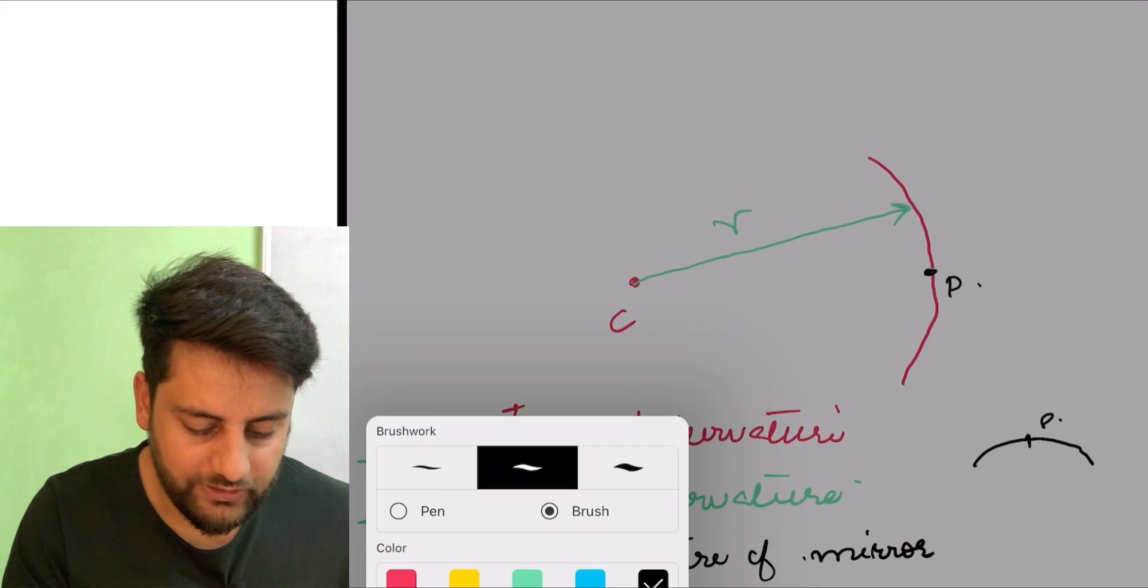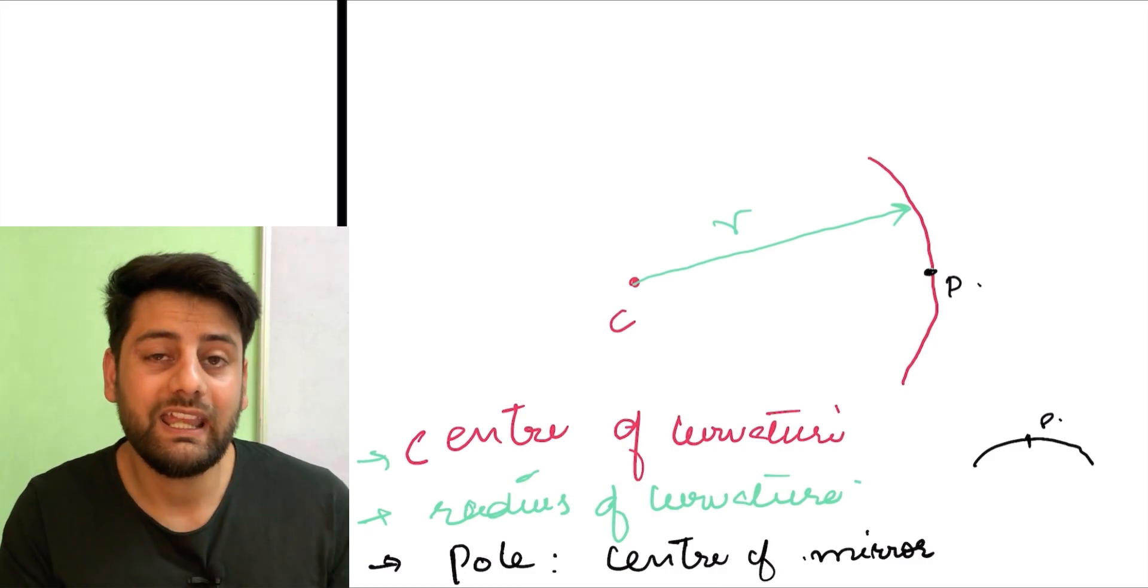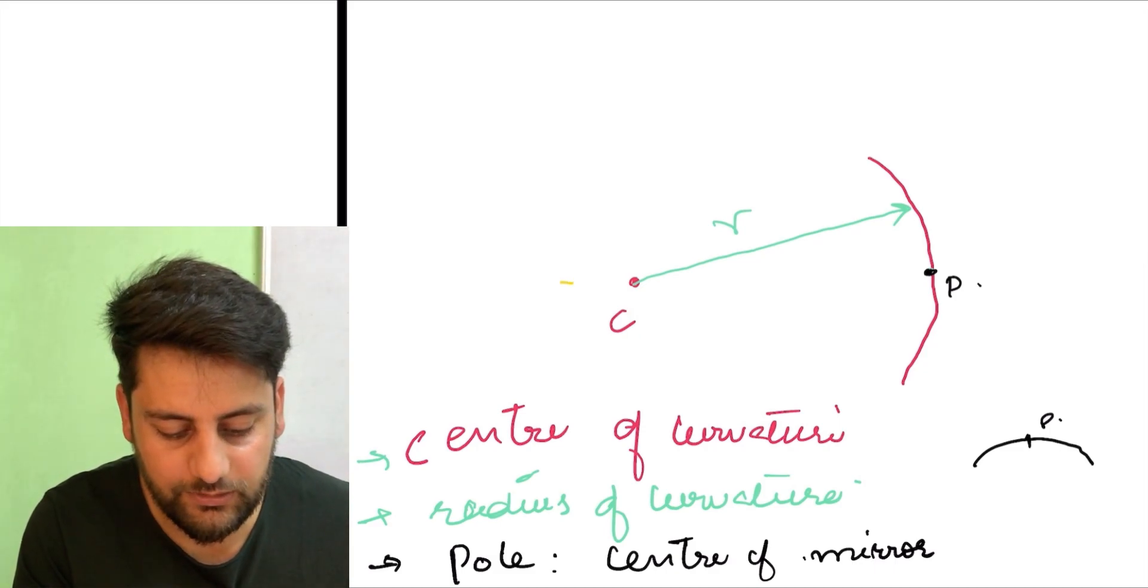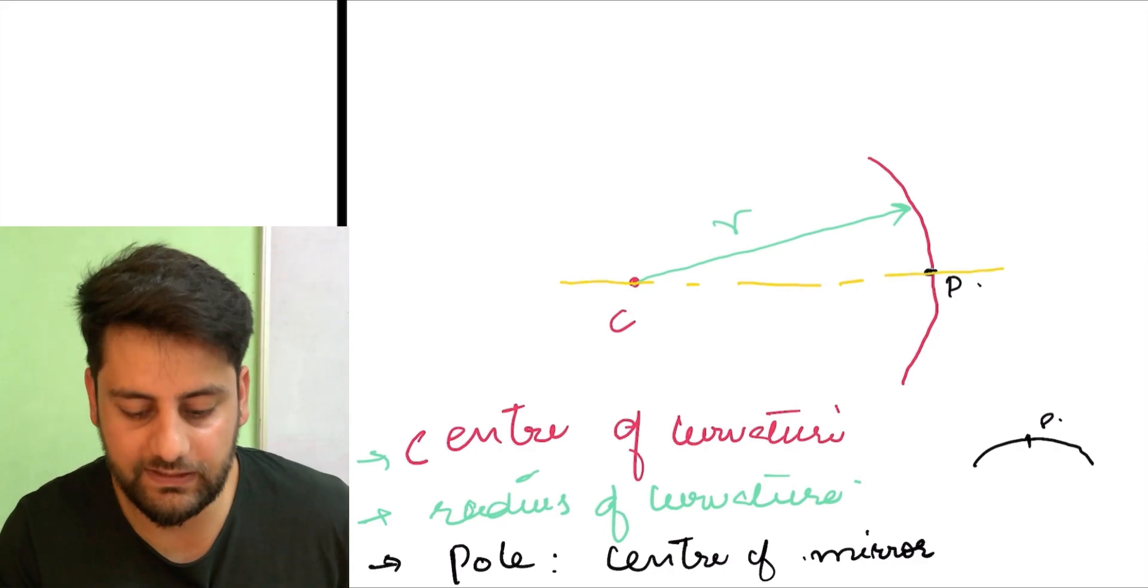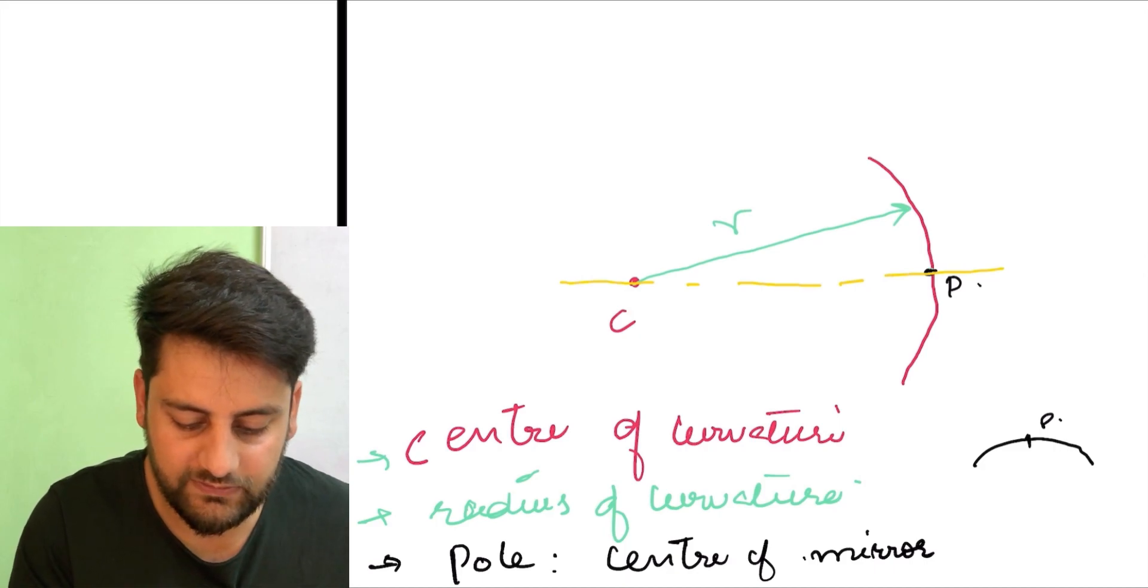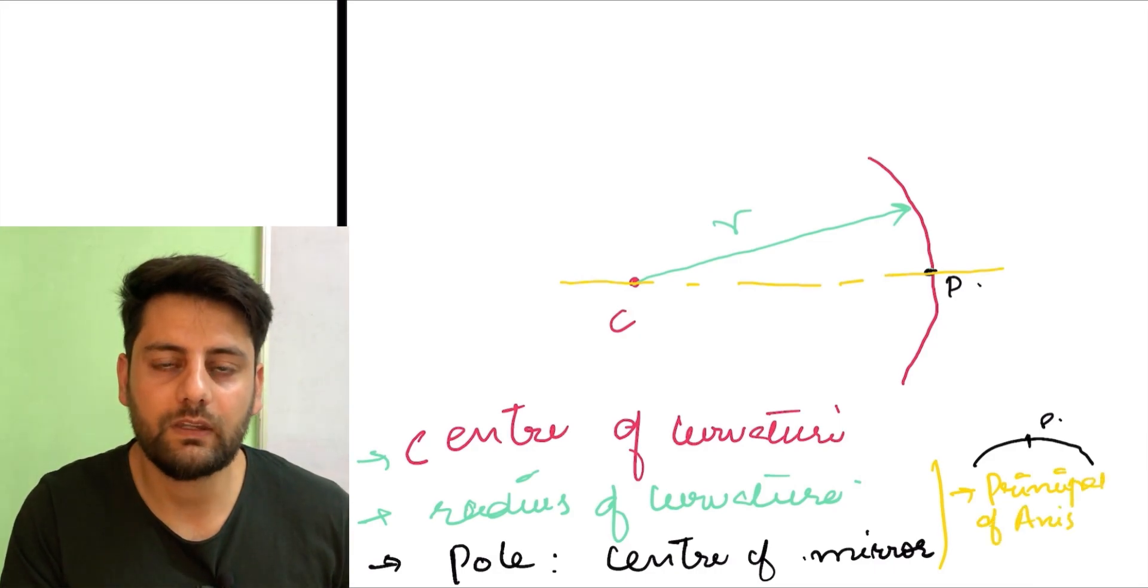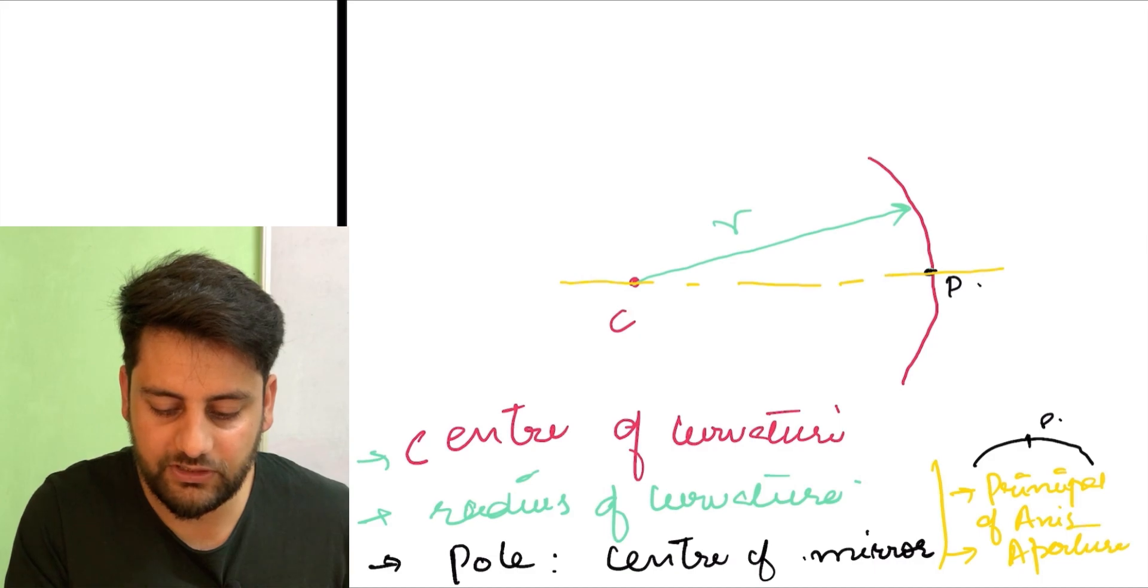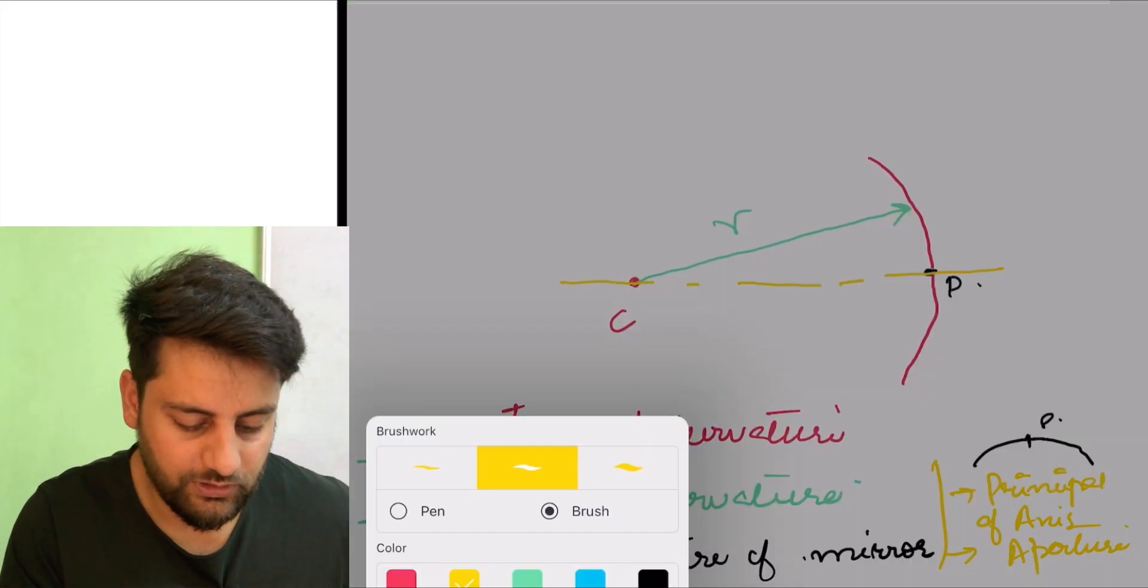Now let's suppose I connect these two points, that is center of curvature and pole. A line which goes through center of curvature and pole, we give it a special name. That is known as principal axis. Obviously, axis is an imaginary axis. So we have one more term, that is known as principal axis. And then we have another term, that is known as aperture. The aperture is nothing but length of the mirror. Mirror kitna bada hai, simply.